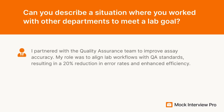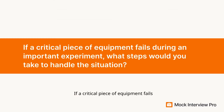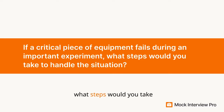Here's an example answer to guide you. I partnered with the quality assurance team to improve assay accuracy. My role was to align lab workflows with QA standards, resulting in a 20% reduction in error rates and enhanced efficiency. If a critical piece of equipment fails during an important experiment, what steps would you take to handle the situation?